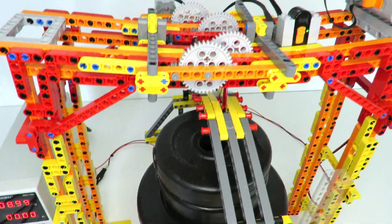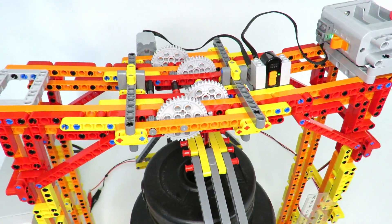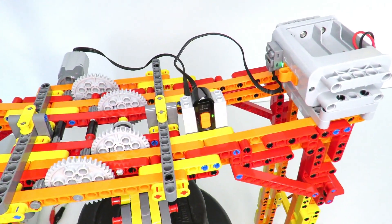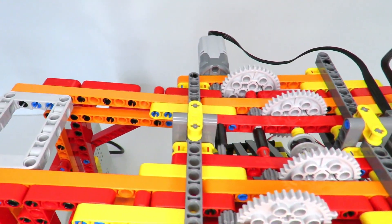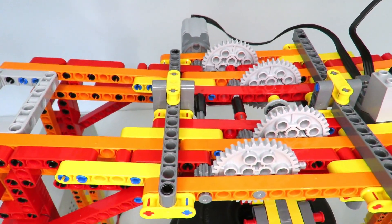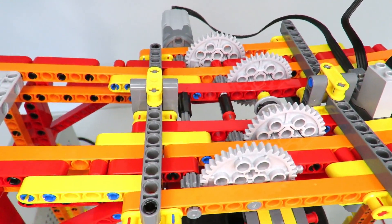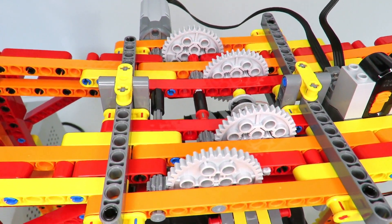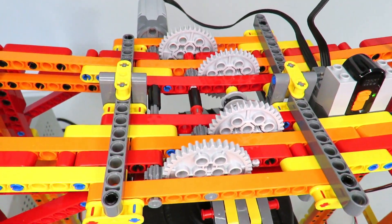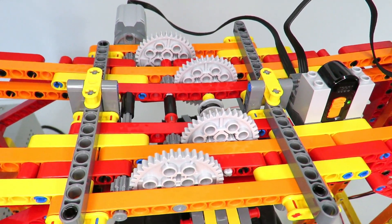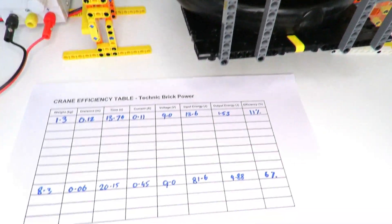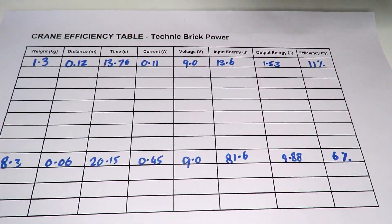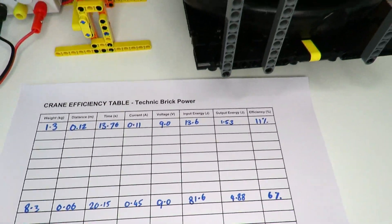Now you might wonder where does all this energy go, because 6% means we've pretty much lost 94% of the energy. Well, some of it will be lost in the IR receiver, some will be lost in the motor. Probably the bulk of it will be lost in friction. So there's quite a lot of friction in the gears. Especially once the weight is on the axle pulling down, it gets bent, and that bending action causes a lot of internal friction. And that's probably one of the reasons why the efficiency for a much higher weight was a lot less, because of the additional friction incurred due to the weight on the axles.